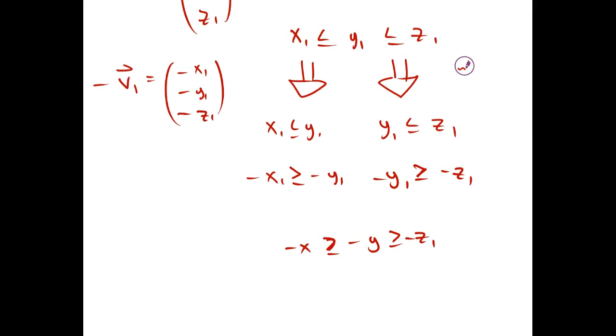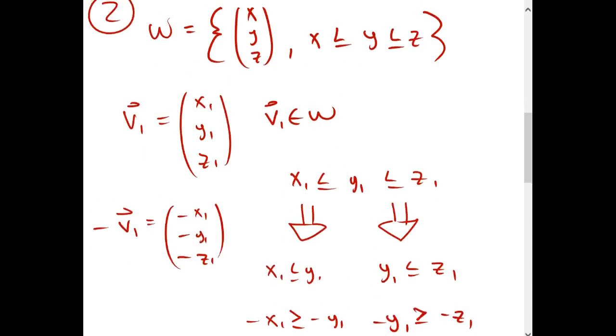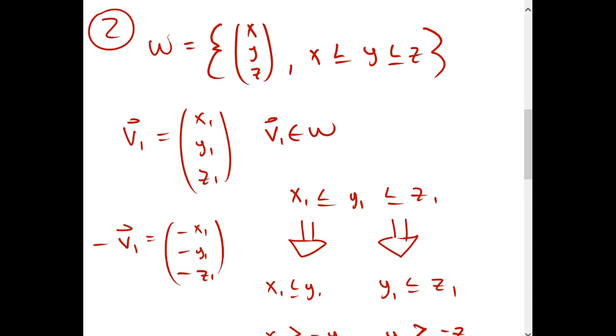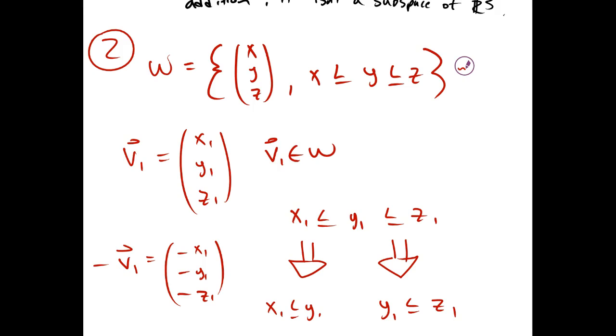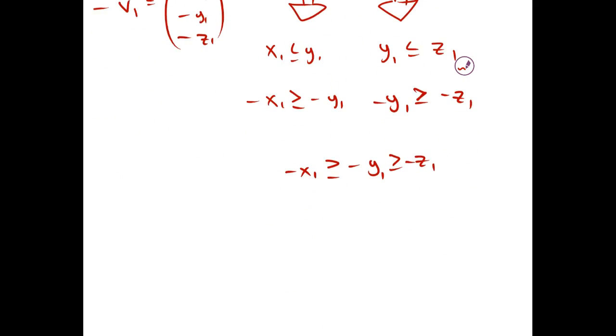Although V1 satisfied the condition where the y component was greater than the x component and less than the z component, the negative of that vector doesn't satisfy the condition because its y component is bigger than its z component and smaller than its x component. Since W isn't closed under scalar multiplication, it isn't a subspace of R^3.